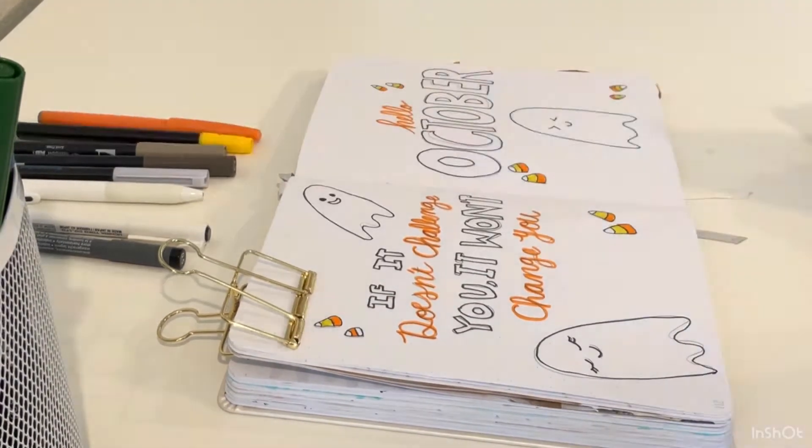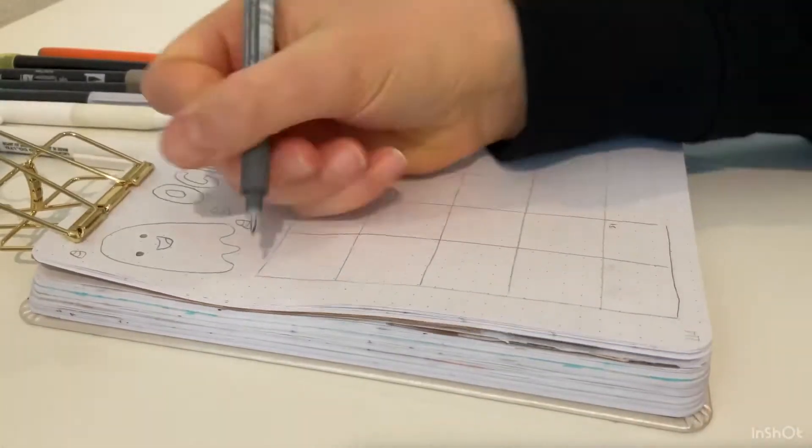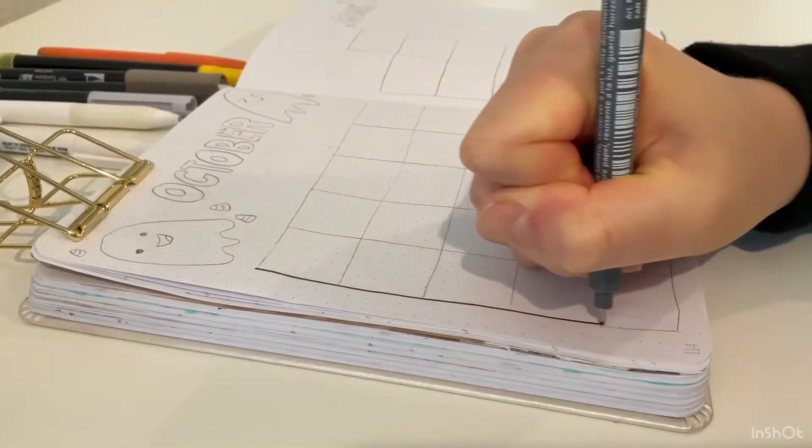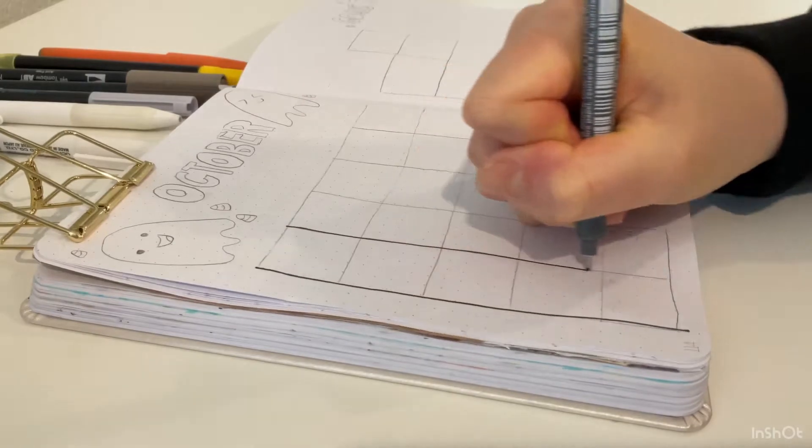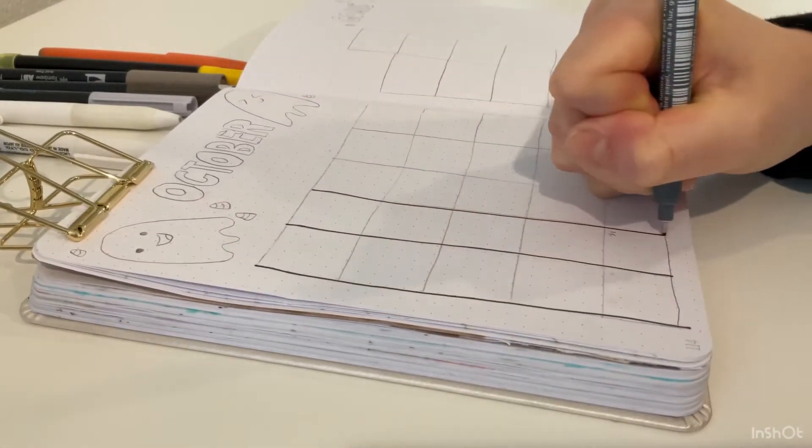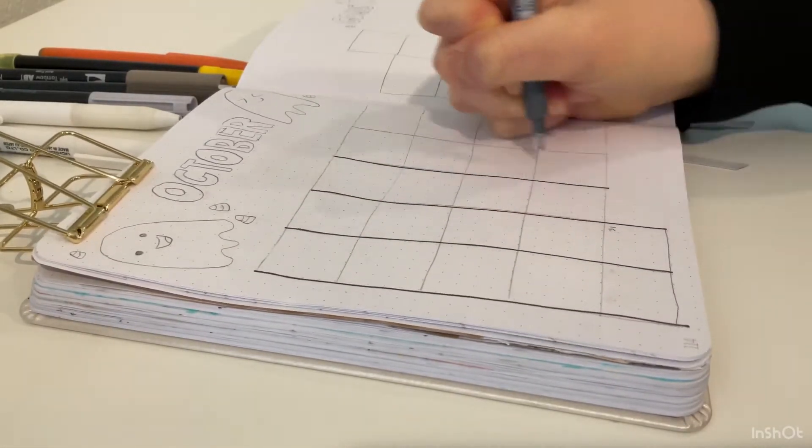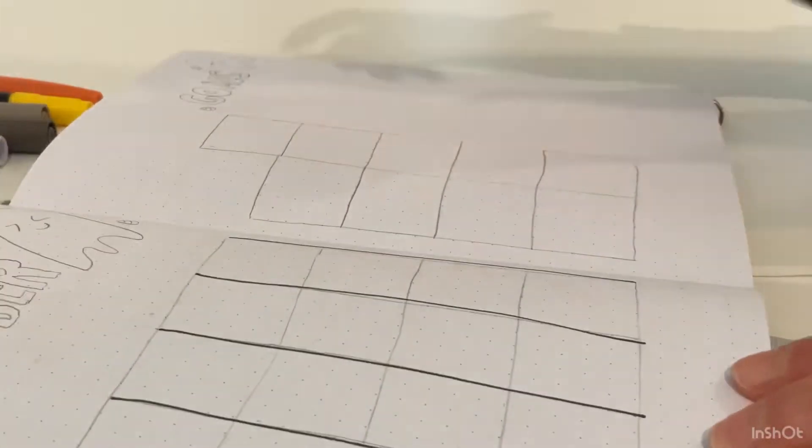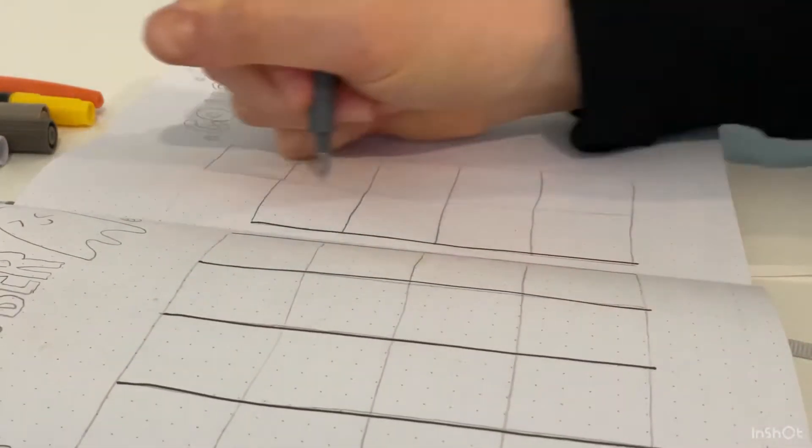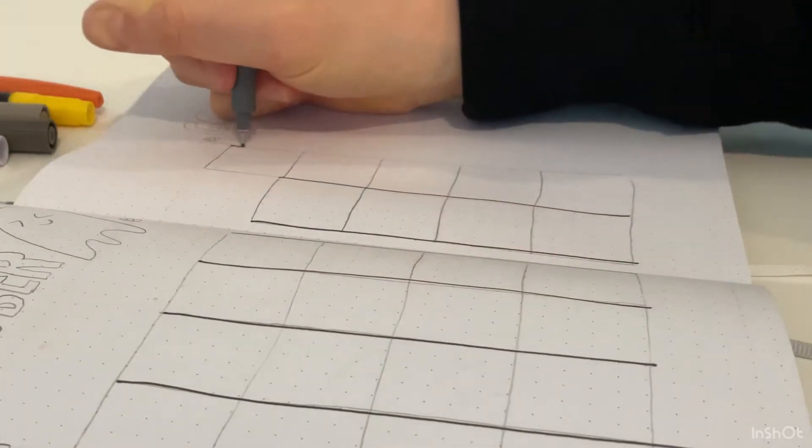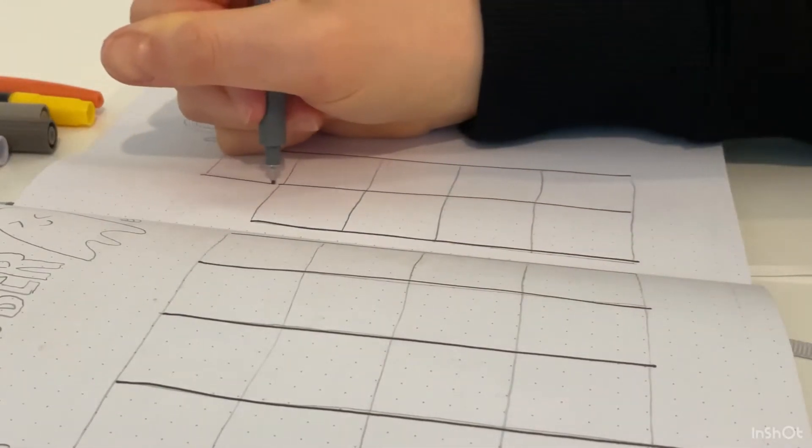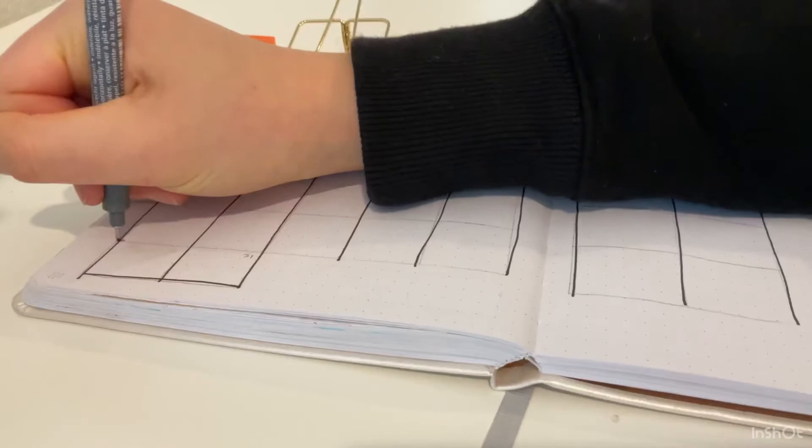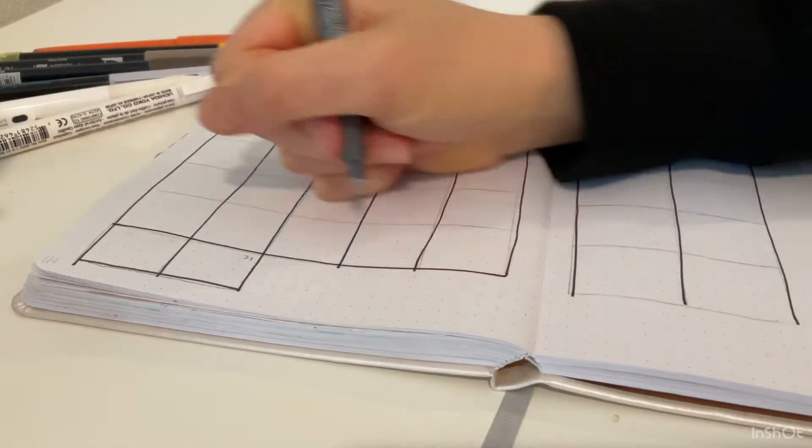Moving on to the calendar page, I'm just going to draw that out. If you know me, I love spinning the notebook to be able to drag the pen towards me because I find that is the easiest way to make a straight line in my opinion. I'm going to do that in this direction first and then I will flip the notebook and do the same thing.